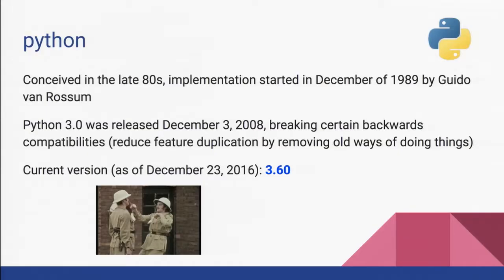So Python. Python was conceived in the late 1980s, started being implemented by Guido von Rossum. Python 3, the big controversy was Python 3 was released in 2008, and they made the conscious effort to break backwards compatibility. When you usually get an upgrade, you don't break things that are in the past. The conscious effort was done to get newer, better ways of doing things.